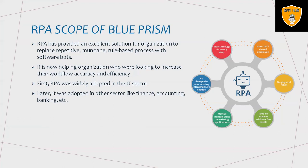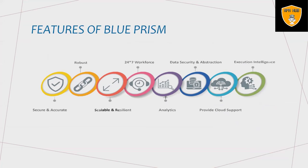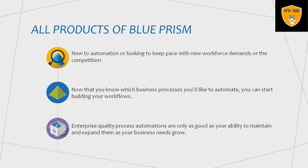This helps remove errors and saves time and cost, with no changes to existing infrastructure needed. It is helping organizations to increase workflow accuracy and efficiency. RPA was widely adopted first in the IT sector and later in finance, accounting, and banking. The key features of Blue Prism include: high security and accuracy, robustness, scalability, resilience, 24x7 support, analytics, data security, extraction features, cloud support, execution intelligence, and ML and AI capabilities.